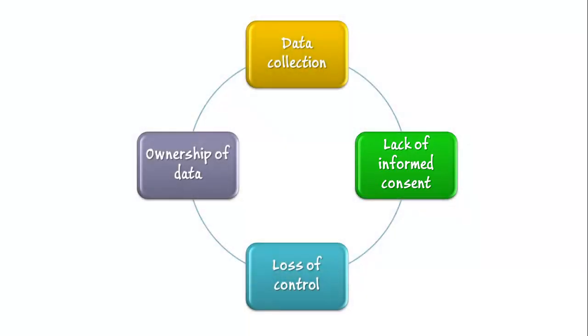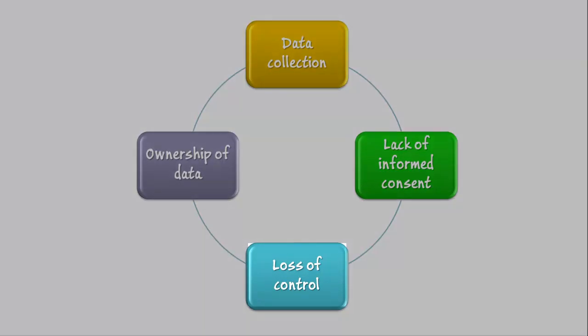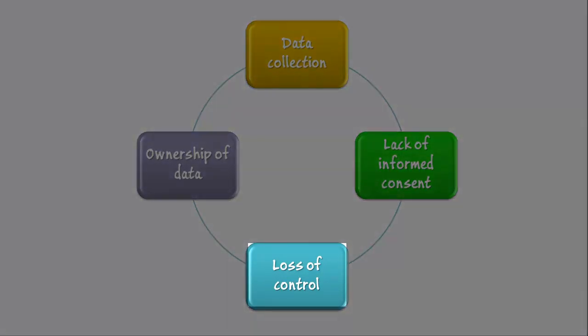The third major threat related to the widespread adoption of ICTs is loss of control. In the information age, potentially private or sensitive information is commonly sold or shared between business partners. Individuals typically have little knowledge of or control over such exchanges. Many companies commonly share or sell individuals' mailing addresses, product preferences, email addresses, and so forth, without informing those individuals or obtaining their permission.